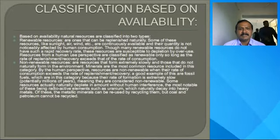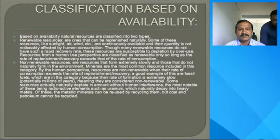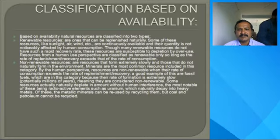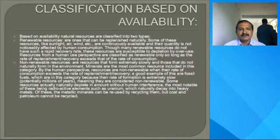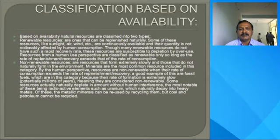There are two types: renewable resources and non-renewable resources. Resources which can be renewed are renewable resources, and those which cannot be renewed are non-renewable. For example, coal, petroleum, and similar substances cannot be renewed, so these are non-renewable substances.